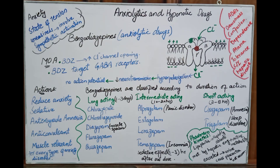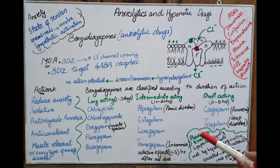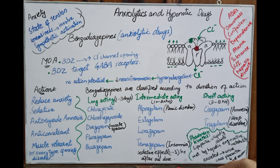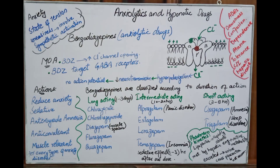Intermediate-acting benzodiazepines include alprazolam, used in panic disorder and anxiety, and temazepam, which has a sedative effect 1–3 hours after oral dose. Short-acting benzodiazepines include oxazepam, used for anxiety disorders, insomnia, and amnesia. Triazolam is a short-acting agent used for sleep disorders. Tolerance and dependence can develop with repeated dosing.